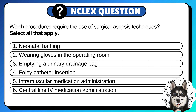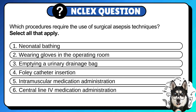Which procedures require the use of surgical asepsis techniques? Select all that apply. 1. Neonatal bathing. 2. Wearing gloves in the operating room. 3. Emptying a urinary drainage bag. 4. Foley catheter insertion. 5. Intramuscular medication administration. 6. Central line IV medication administration.